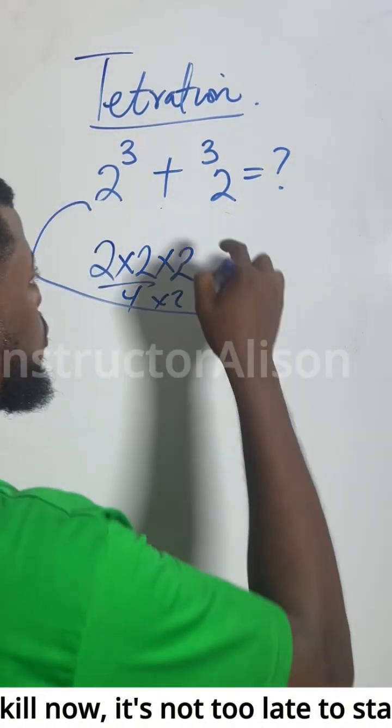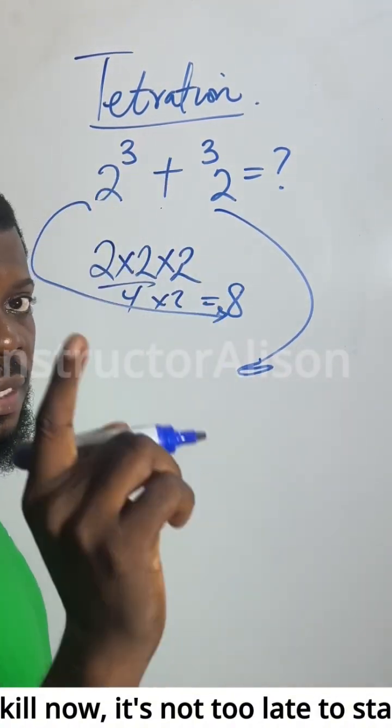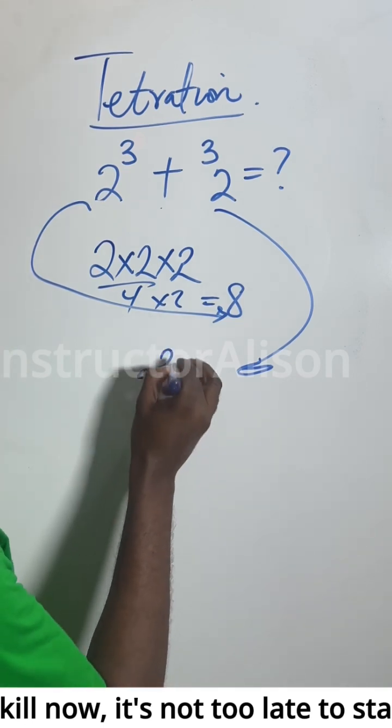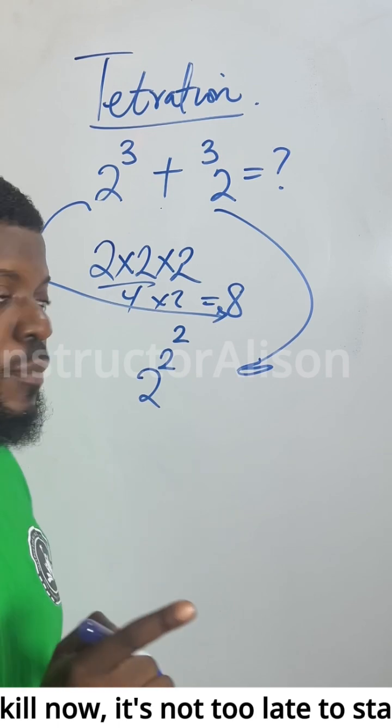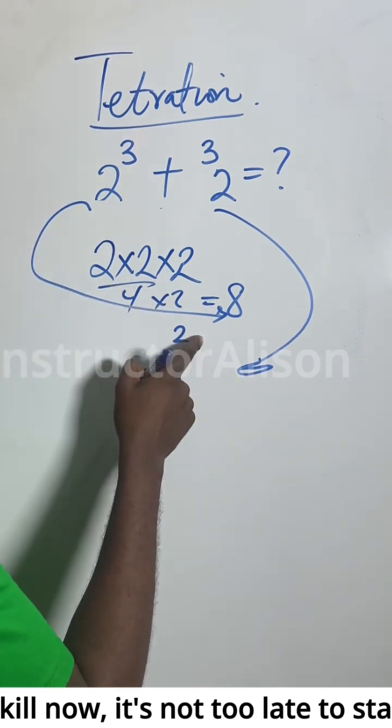Now what about 2 tetration 3? That means 2 to the power of 2 to the power of 2. That's what it means. Does that make sense? 2 to the power of 2 to the power of 2.